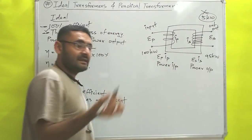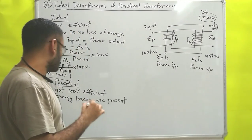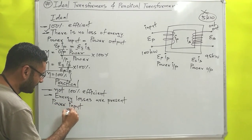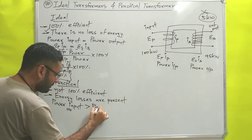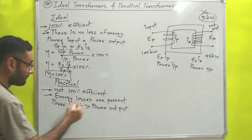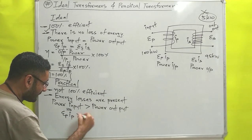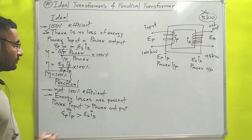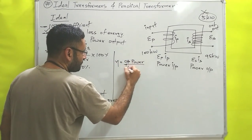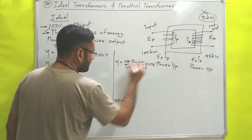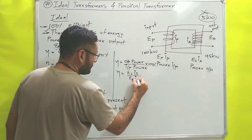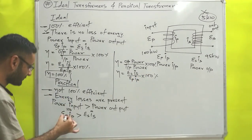How that power is wasted and which are the energy losses — for that I will prepare one separate video. For the case of a practical transformer, power input is greater than power output because some power is wasted due to energy losses. Power at input is Ep·Ip and output is Es·Is. The efficiency of a practical transformer equals output power divided by input power, multiplied by 100 percentage. So efficiency equals Es·Is divided by Ep·Ip, multiplied by 100%.